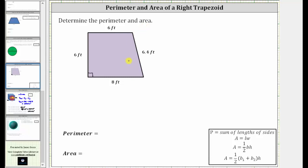Determine the perimeter and area of the right trapezoid. Let's begin with the perimeter. The perimeter of a polygon is the distance around the outside of the polygon.